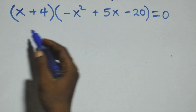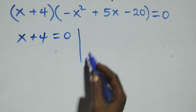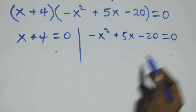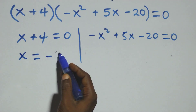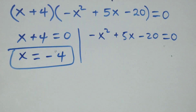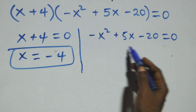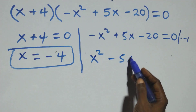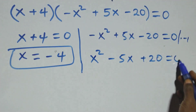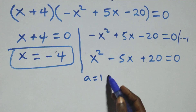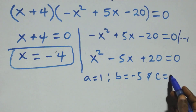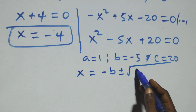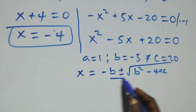Now we have two possible cases. The first: x plus 4 equals zero, or minus x squared plus 5x minus 20 equals zero. From the first case we get x equals minus 4, which is a real solution. For the quadratic, we multiply through by minus 1 to get x squared minus 5x plus 20 equals zero. This gives us a equals 1, b equals minus 5, c equals 20. We apply the quadratic formula: x equals minus b plus or minus square root of b squared minus 4ac, all over 2a.